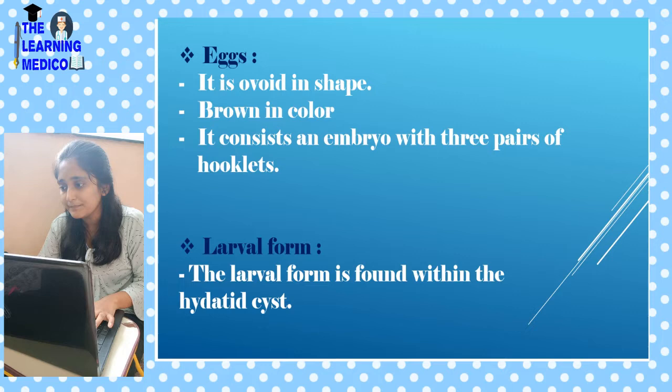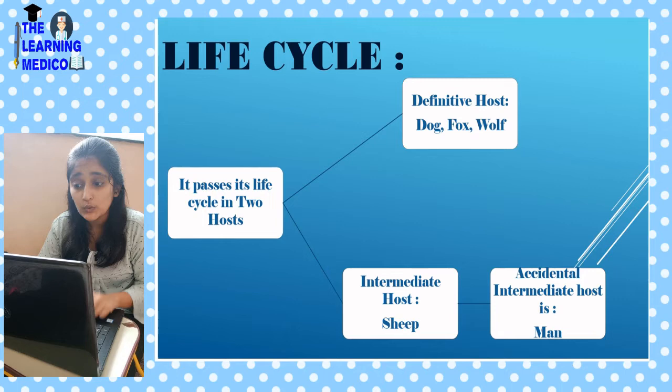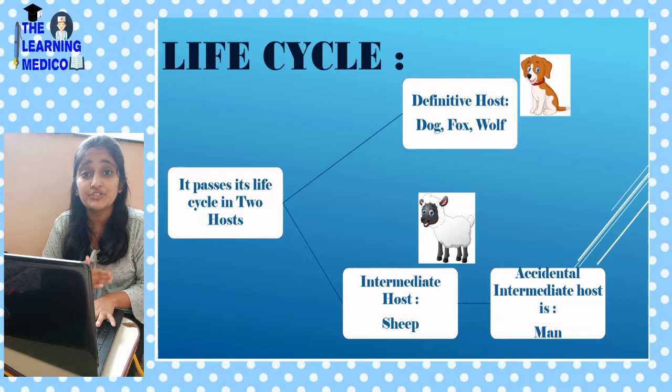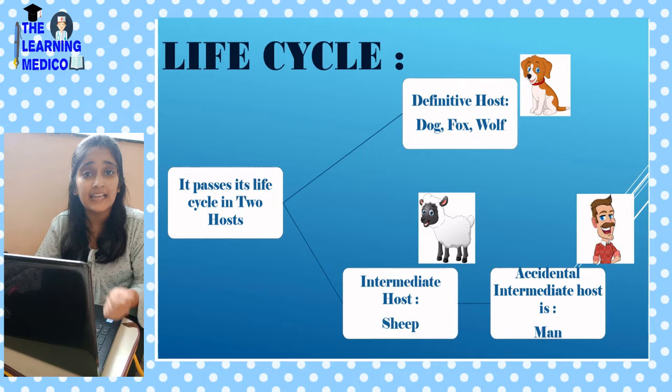Life cycle. It passes its life cycle in two hosts. The definitive host is the dog — or fox or wolf, but mainly dog. The intermediate host is sheep. The accidental intermediate host is man: if human beings accidentally swallow eggs through contaminated food or water, they can get infected.